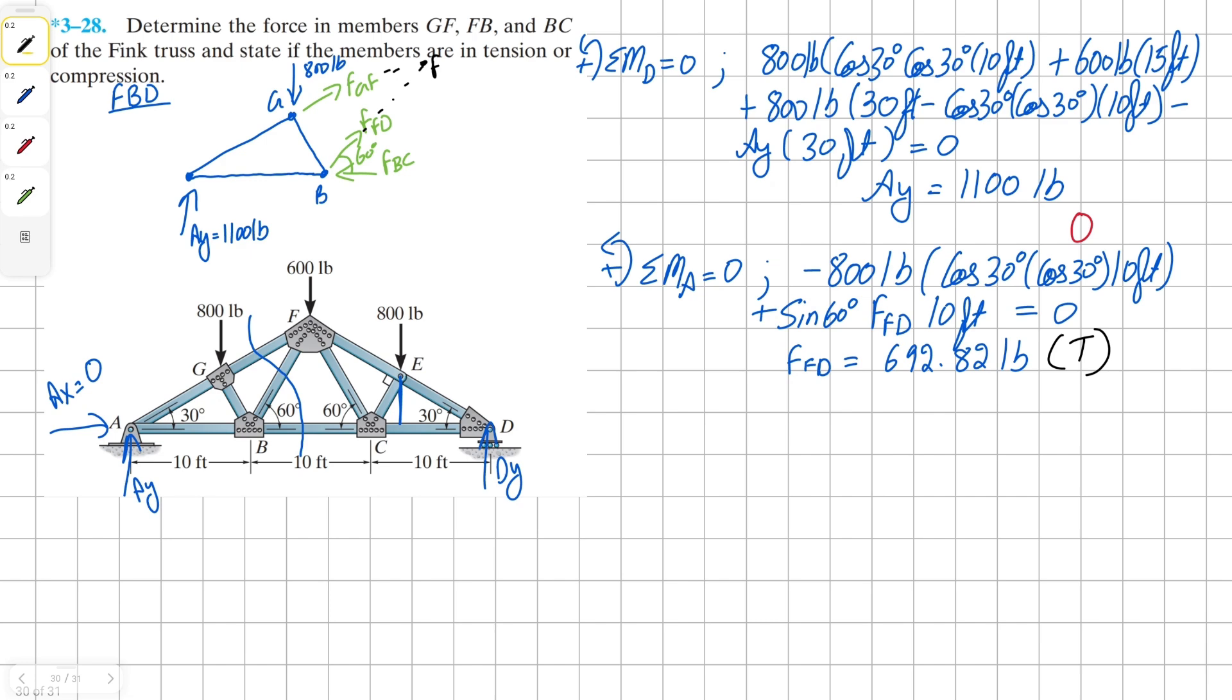Now we can sum the forces in X and Y direction to find force for member GF and BC. I'm going to start with vertical direction. We're going to have Ay, which is 1,100 pounds, plus the vertical component of force FB. Then we have vertical component of force GF. And we missed one external reaction force here, which is 800 pounds at G, all equals to zero.